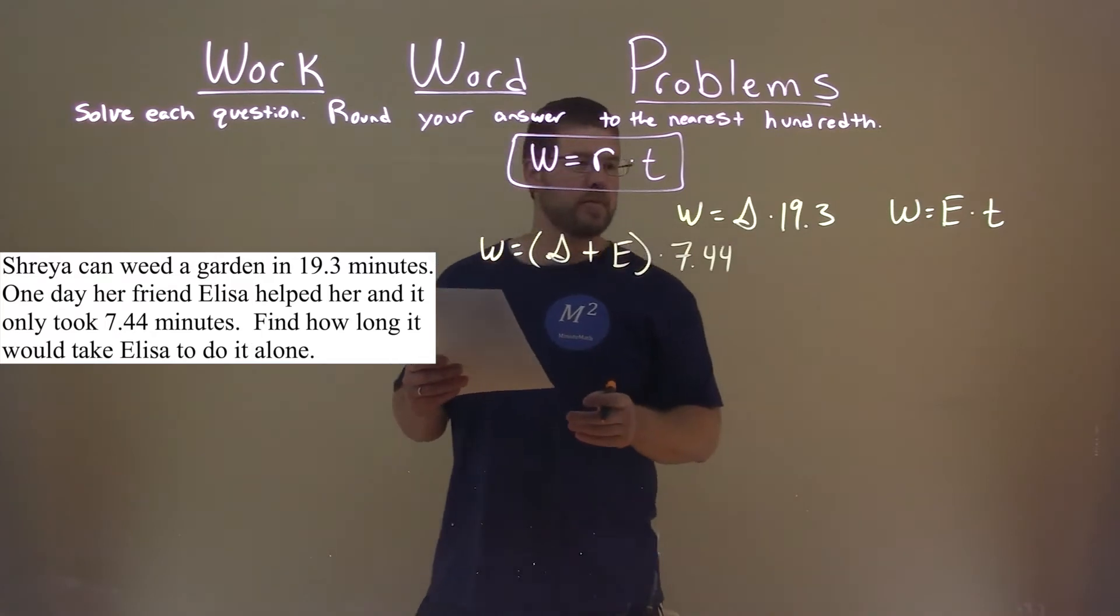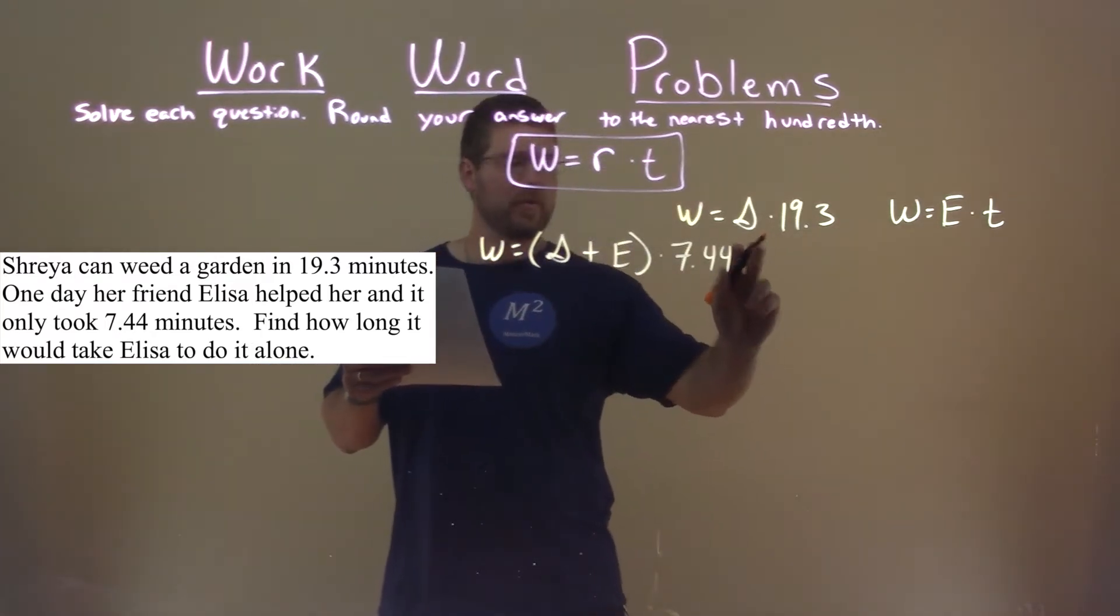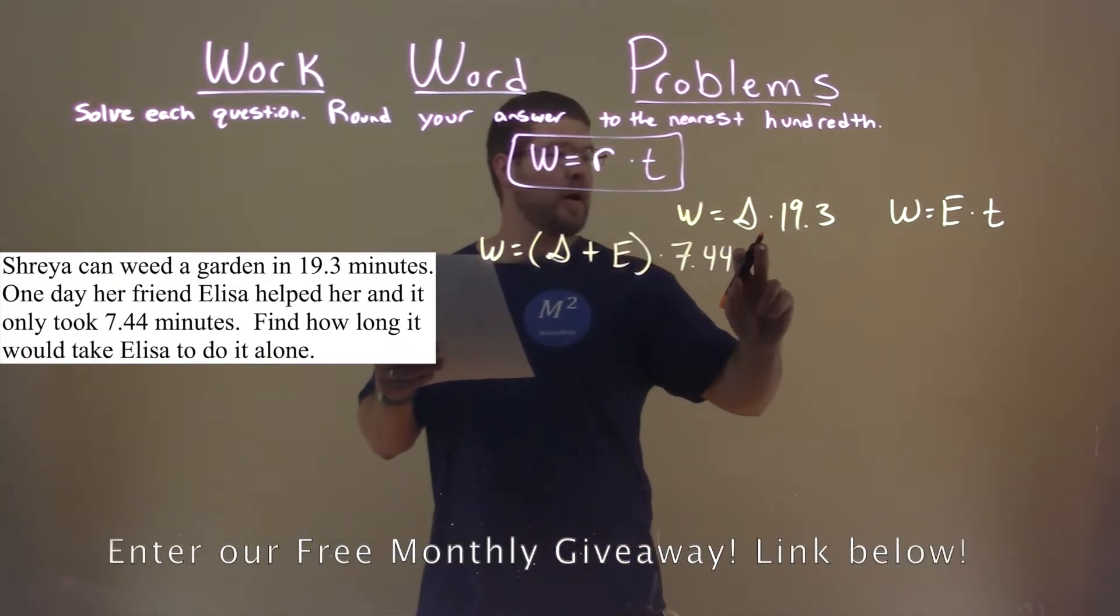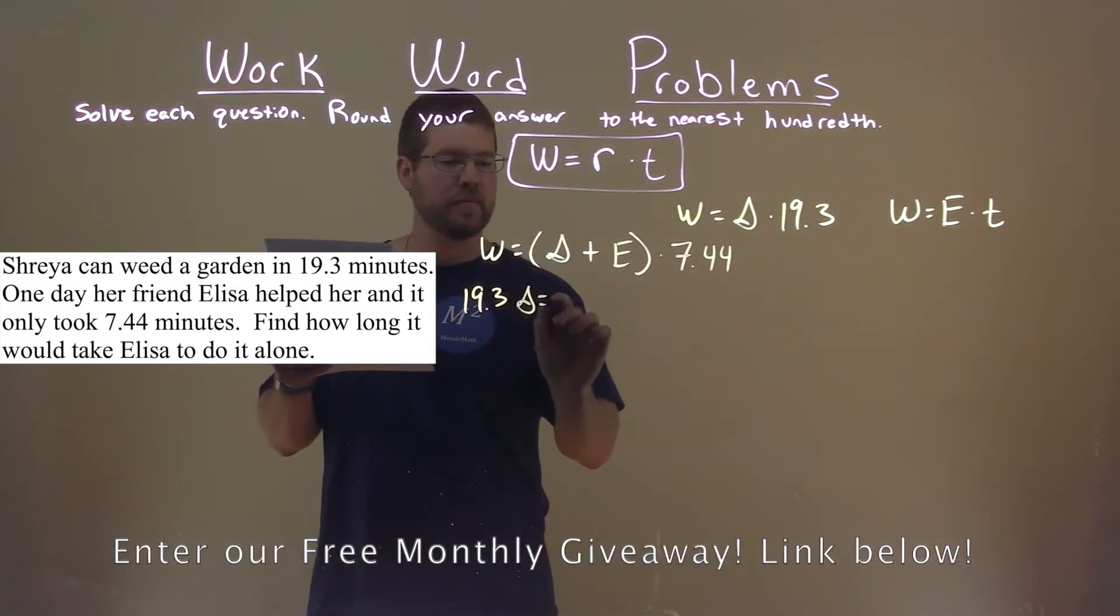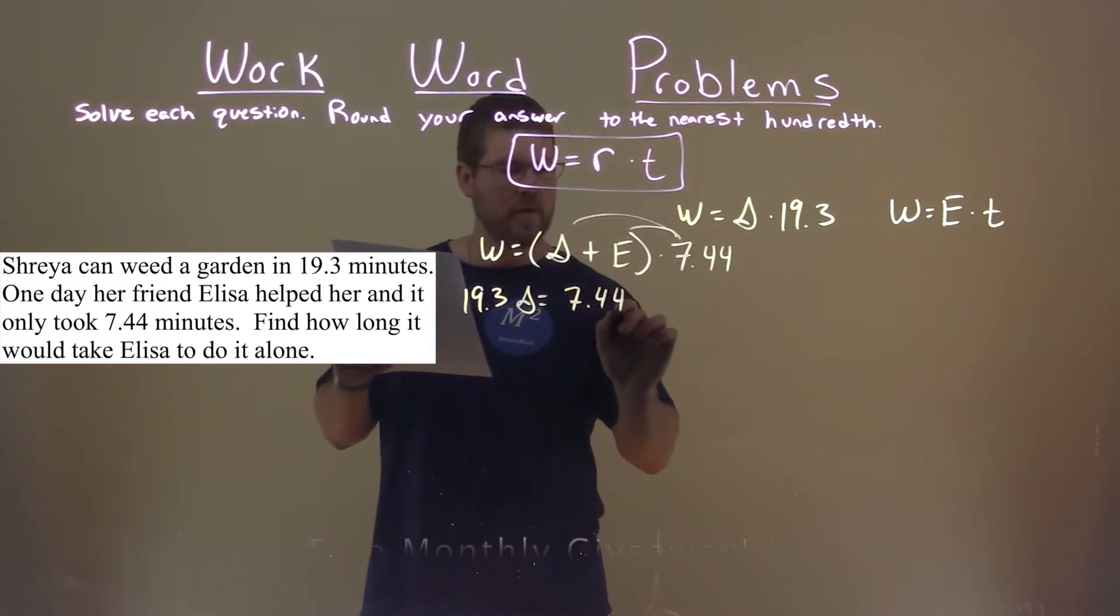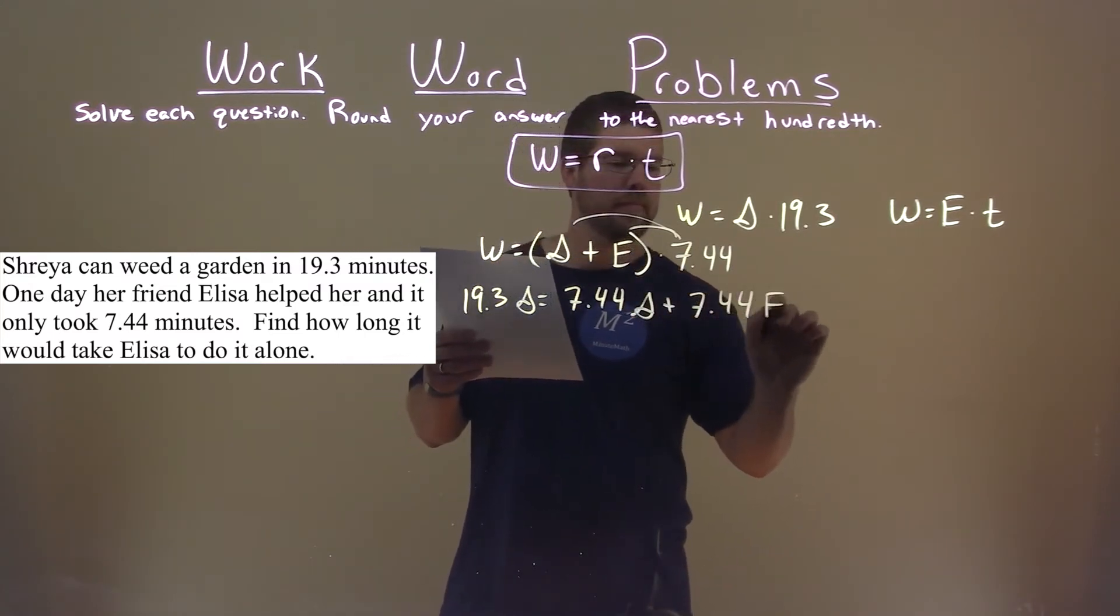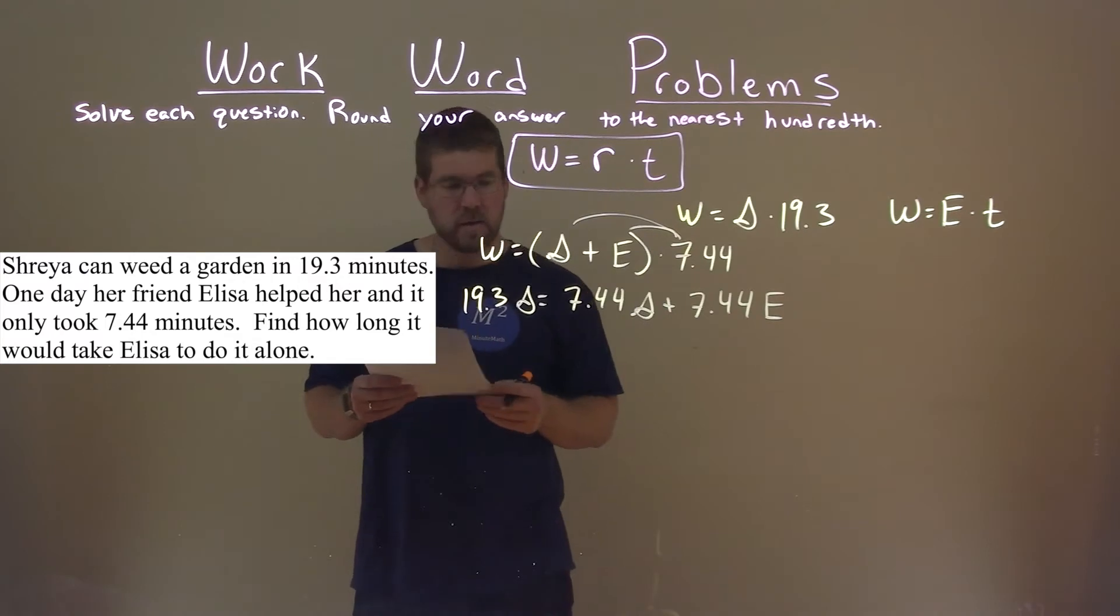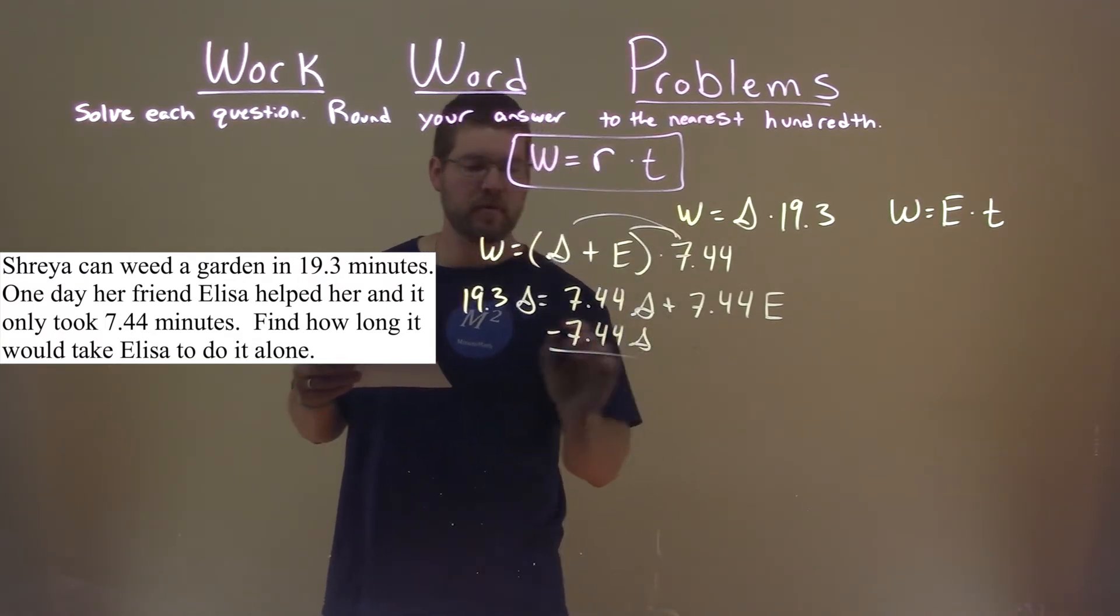So, let's just adapt this sum. We can replace our work, we know it's equal to Shreya's rate times her time. So, let's put the time first, 19.3 S, and let's go distribute the 7.44. We have 7.44 S here, plus 7.44 E. Combine like terms, we subtract 7.44 S from both sides.